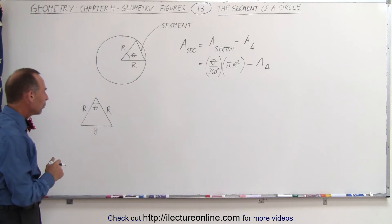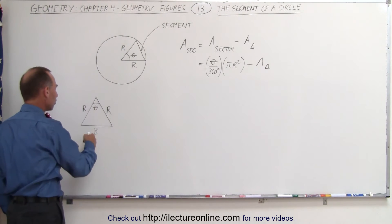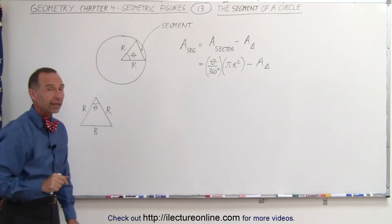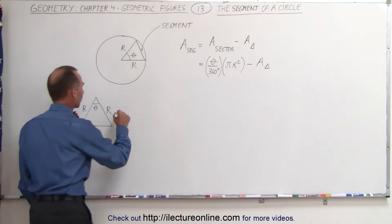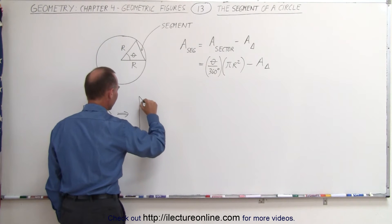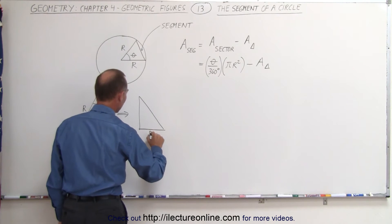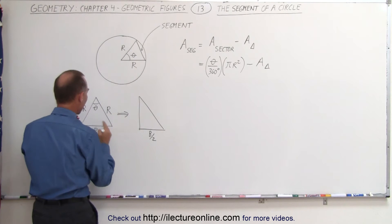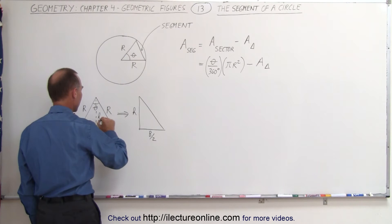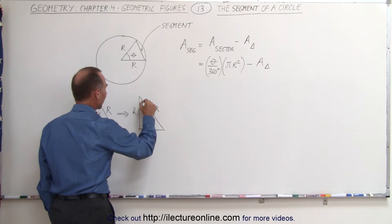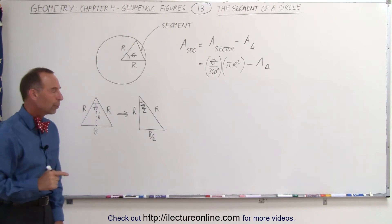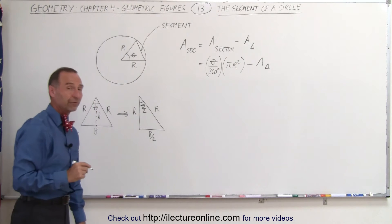In order to find the area of the triangle, we need a relationship between the height, the base, and r, and that relationship will come through the angle theta. To make it easier, we're going to take half the triangle and redraw that half. At the bottom we have base divided by 2, this is the height of the triangle, we still have r, and the angle is now theta divided by 2. We'll relate these using trig functions.